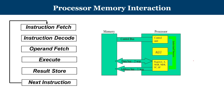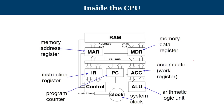We have seen that the execution cycle of a program consists of instruction fetch, decode, operand fetch, execute, storing the result, and then moving on to the next instruction. There are a few important registers like MAR, MDR, IR, program counter, accumulator — all working together along with the control unit to get tasks done in the arithmetic logic unit. Overall, this is controlled by a system clock.